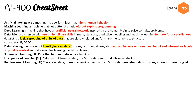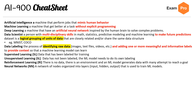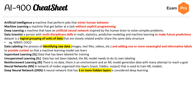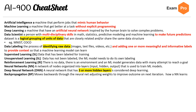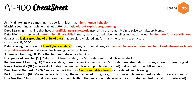You have neural networks, also abbreviated as NN — a network of nodes organized into layers: input, hidden, and output, used to train ML models. Deep neural networks, or DNN, are neural nets that have three or more hidden layers — considered deep learning. Backpropagation moves backwards through a neural net, adjusting weights to improve outcome on each iteration; this is how a neural net learns. Loss function: a function that compares the ground truth to the prediction to determine the error rate — how bad the network performed.